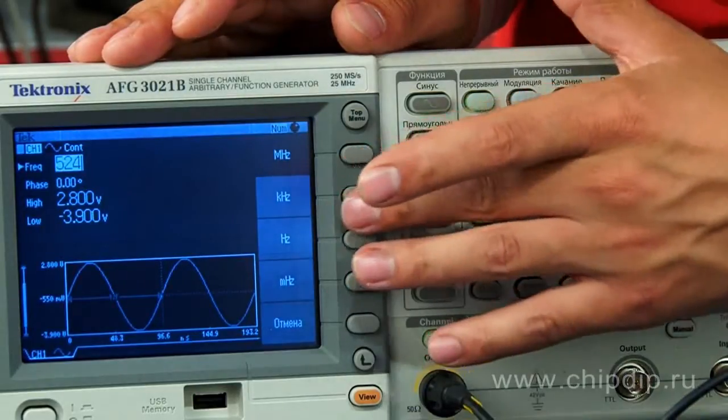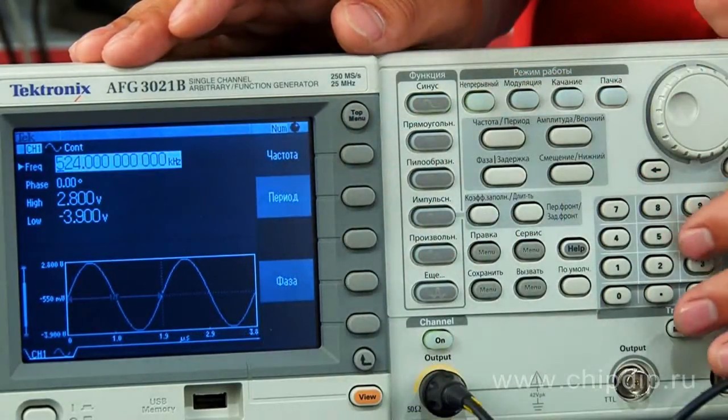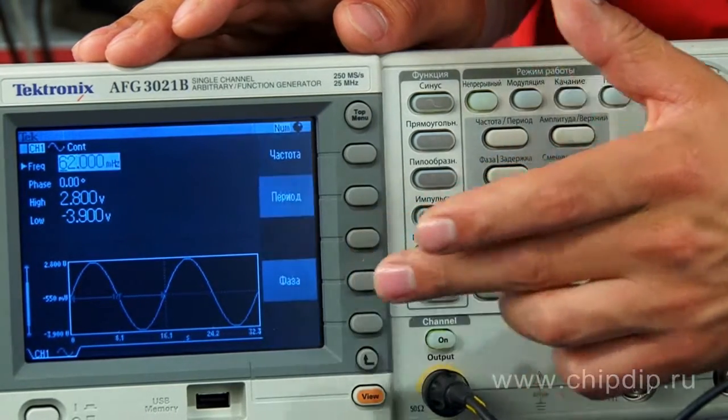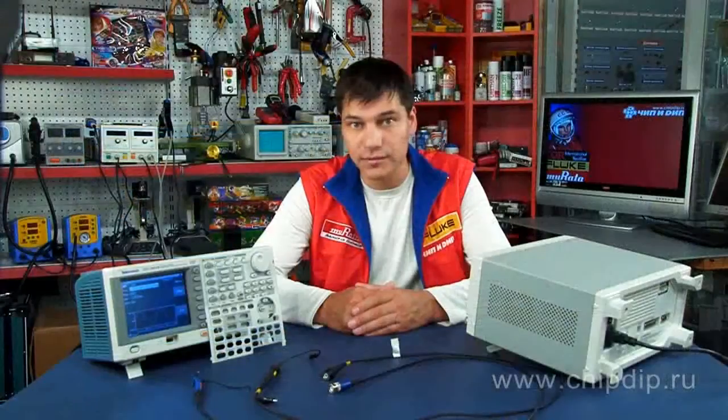Thanks to unchallenged productivity, universality, intuitive management, and reasonable price, the Tektronix AFG3000B generator is one of the most useful devices in this field.